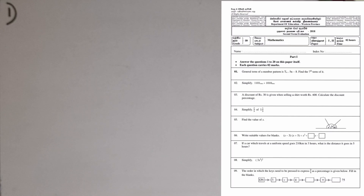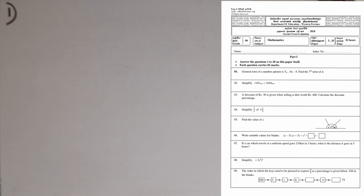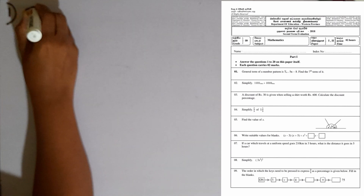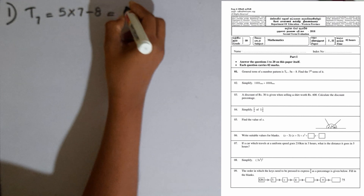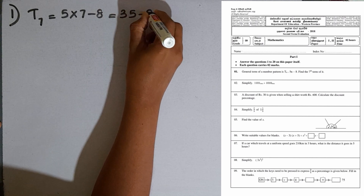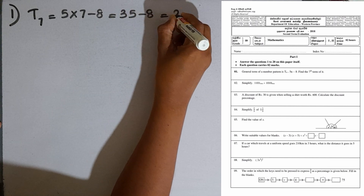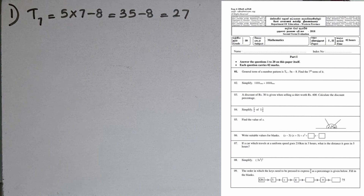First question: the general term of a number pattern is Tm equals 5n minus 8. Find the 7th term. When we want to find the 7th term, we substitute 7 into the general term. So Tm equals 5 multiplied by 7 minus 8, which gives 35 minus 8. The answer is 27. The 7th term is 27.